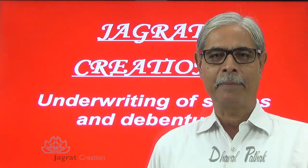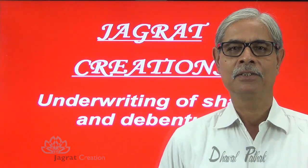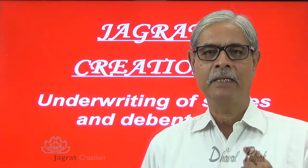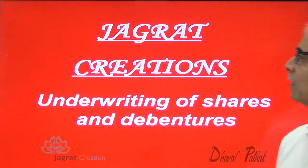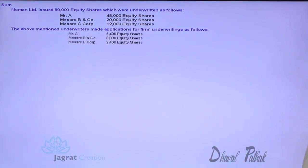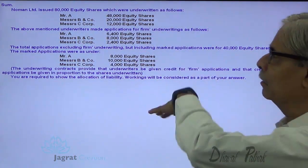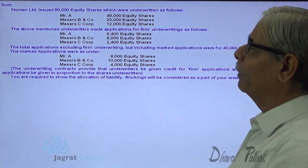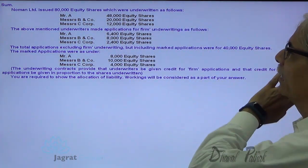Now this underwriting is an agreement. The important point we want to study is how the liability of underwriters to subscribe for shares is determined. I want you to observe this sum on the screen. Norman Limited issued 80,000 equity shares, which were underwritten as follows.